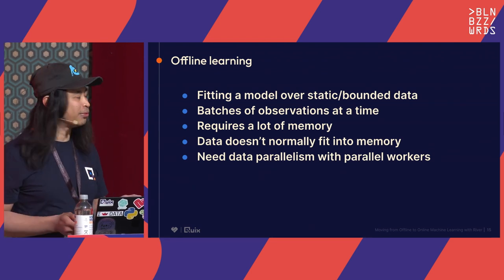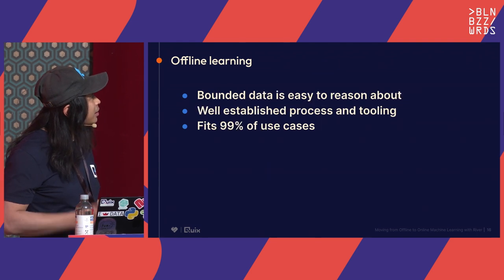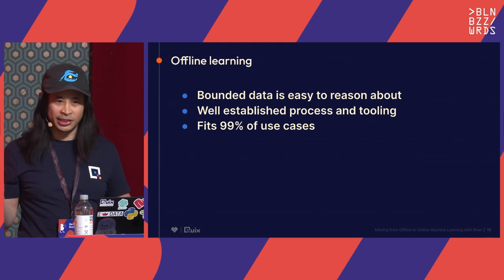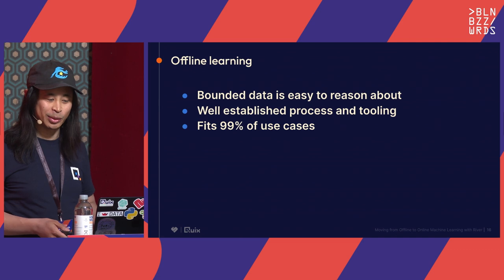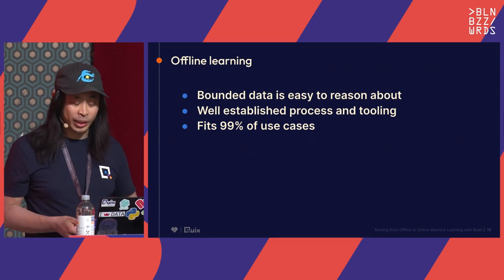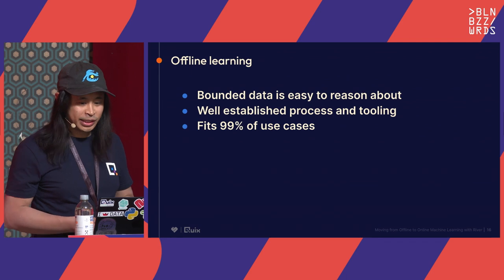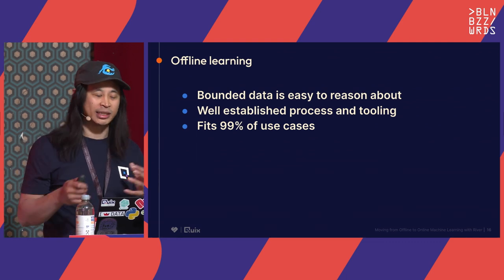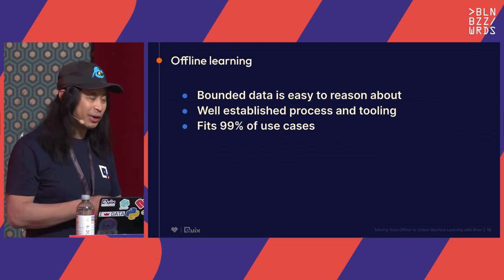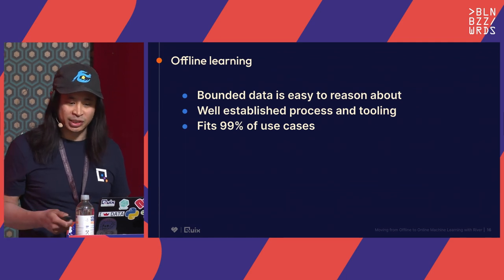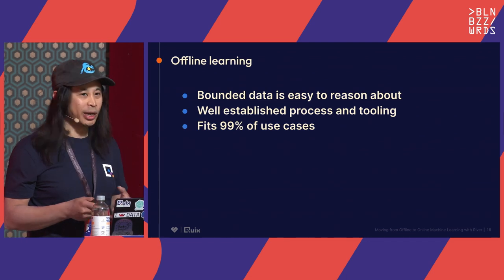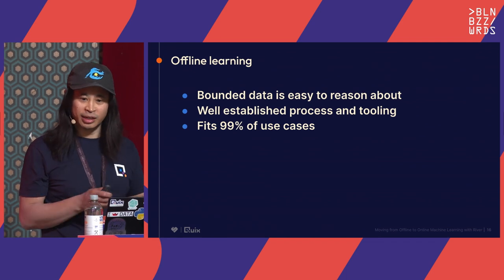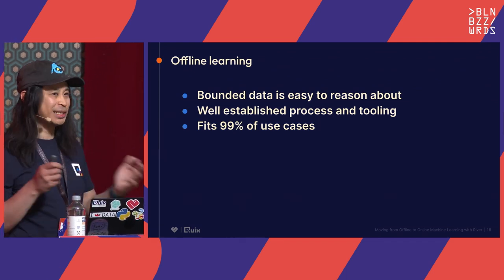Bounded data is really easy to reason about — you could get a dataset encompassing a whole calendar year of observations. It's a very human way to approach data, and it has lots of well-established processes and tooling. Machine learning really was born from data analysis — it used to be called pattern recognition. You'd always have static data to analyze, and over time you wanted to get more advanced with forecasting and predictions. That's why data science and batch machine learning are so deeply intertwined.